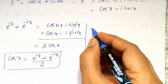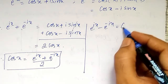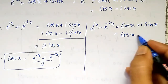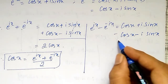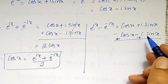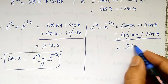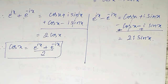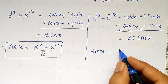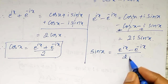Similarly, if I subtract them: e to the power ix minus e to the power minus ix equals cos x plus i sin x, minus cos x minus i sin x. The cos x cancels and we remain with 2i times sin x. Therefore, sin x equal to e to the power ix minus e to the power minus ix, divided by 2i.